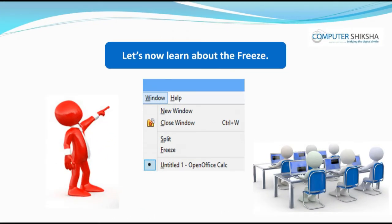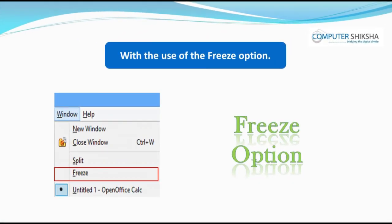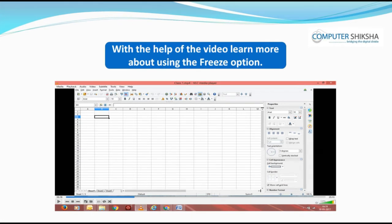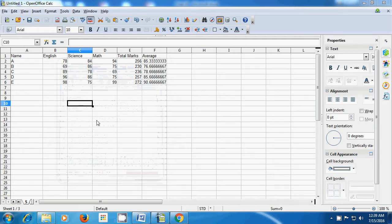Let's now learn about the freeze option. With the freeze option you can fix any row or column on your sheet. Once you have fixed the row or column, when you move the sheet up or down using the arrow keys or the pointer, the fixed rows and columns will not move. These cells will remain in their place while the rest of the sheet moves. Let us now see how we can use the freeze option to fix any rows or columns.